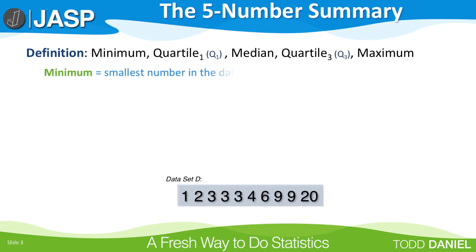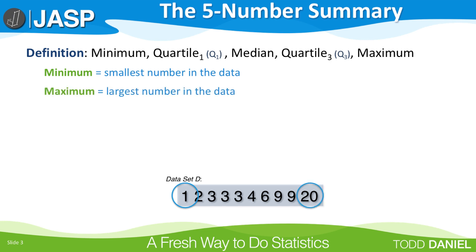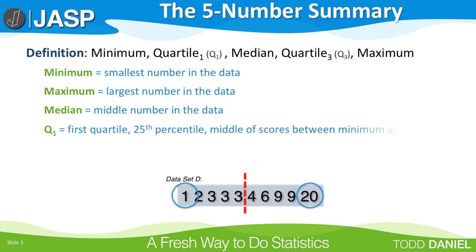The minimum is the smallest number in the data set. The maximum is the largest number in the data set. The median is the middle number in the data set, calculated using a median split such that if there is no actual middle number, we use an average of the two numbers on either side. Quartile one is the first quartile, also known as the 25th percentile — the middle of the scores between the minimum and the median.